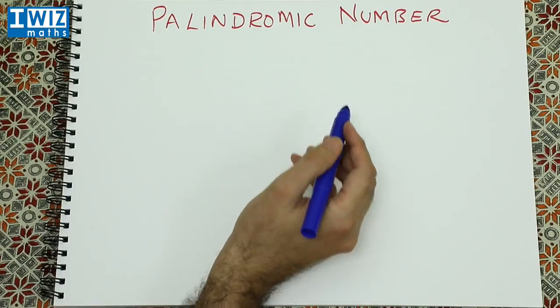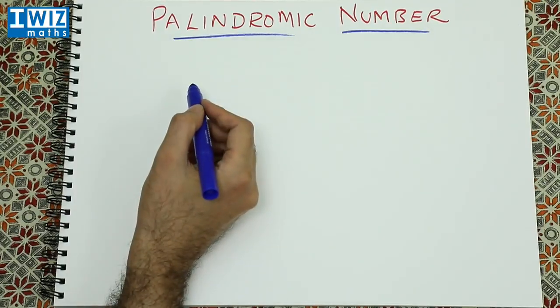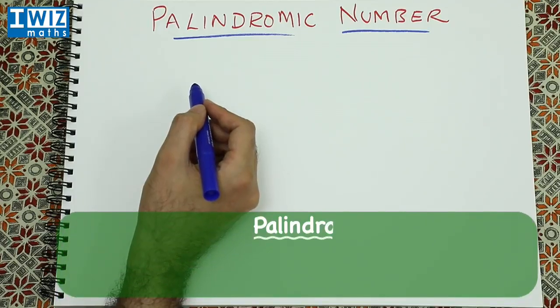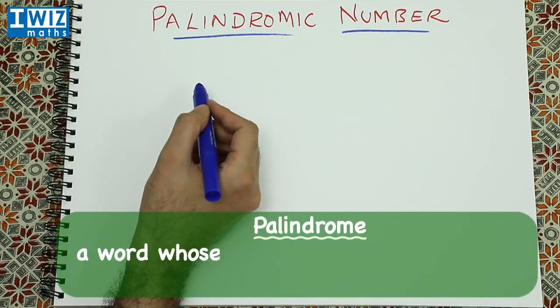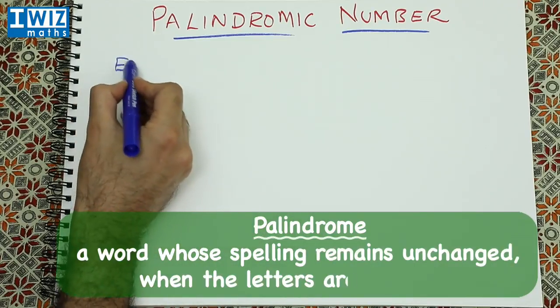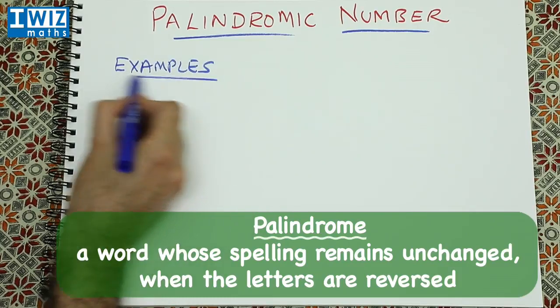The number 666 is a palindromic number. Now palindromic is derived from the word palindrome, and palindrome is a word whose spelling remains unchanged when the letters are reversed. So let's look at some examples.